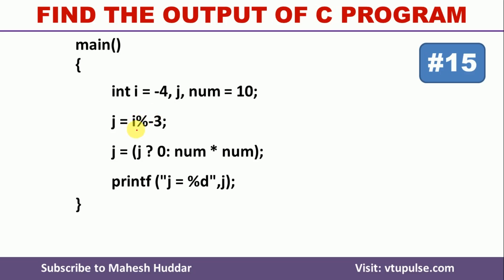Now, the evaluation starts at this particular stage because this is just a declaration of different variables and initialization of some of the variables. The value of i is minus 4.